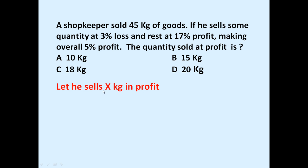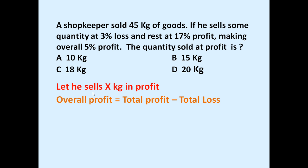To answer this, let us assume he sells x kg at profit. Total quantity is 45 kg, so the quantity sold at loss is 45 minus x kg. The overall profit of 5% equals total profit at 17% minus total loss at 3%.